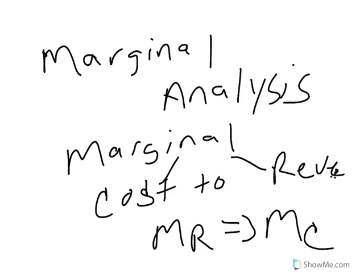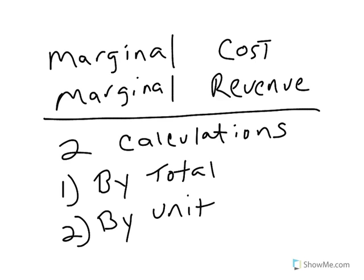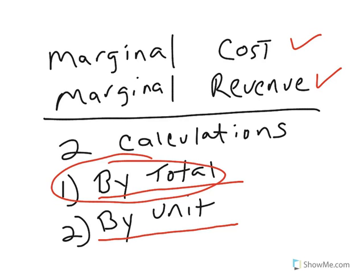Now, in order to properly perform this analysis, both marginal revenue and marginal cost need to be calculated in the same way. Both marginal cost and marginal revenue can be calculated in two ways: the first is by total cost, and the second is by cost per unit. If you're calculating marginal cost or marginal revenue in totality and then calculating the other by unit, one is always going to be greater than the other. So in order to accurately perform a marginal analysis, both must be calculated using the same calculation.